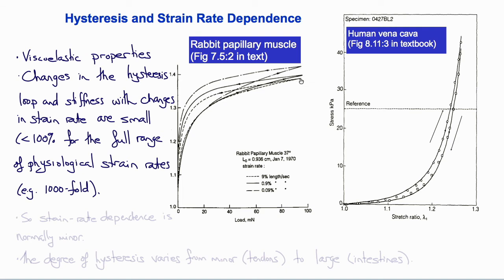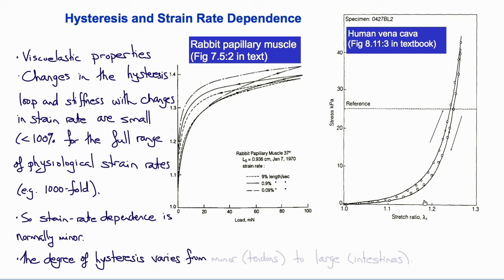For typical physiological ranges of strain rate, the effect of strain rate on the stress-strain relationship is typically fairly minor. The degree of hysteresis — the area of the hysteresis loop — varies between tissues, from relatively minor as seen in vena cava or in tendons and ligaments, to much larger. It's somewhat larger in cardiac muscle, and in tissues with a lot of smooth muscle, such as the intestines, it's even higher.